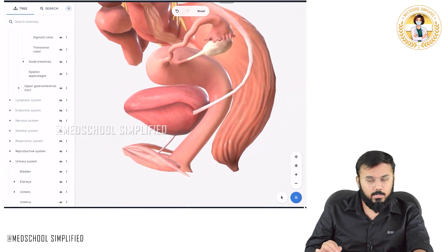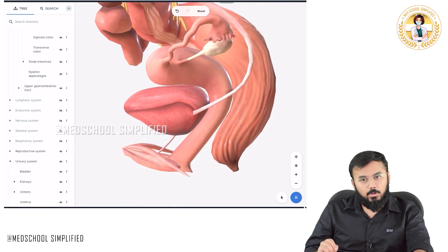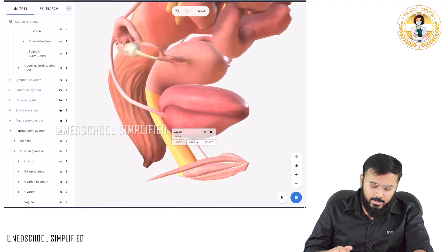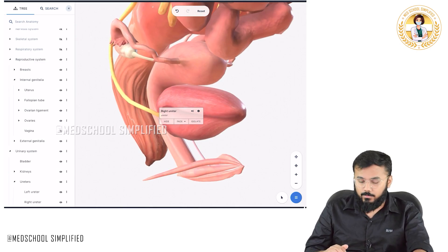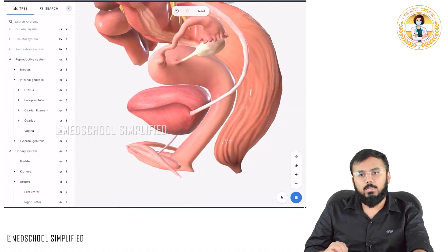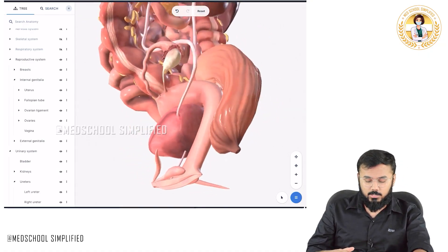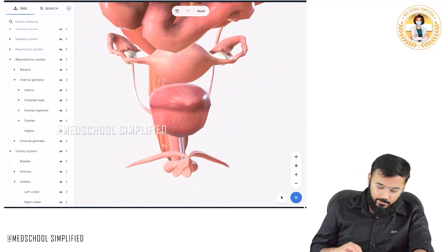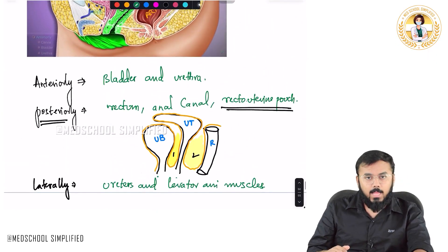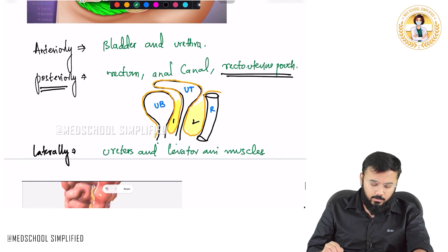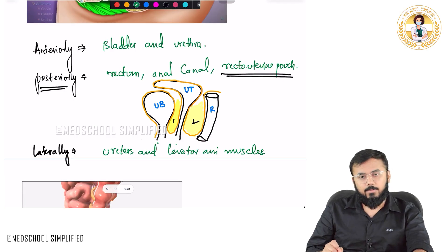Laterally, this is the vagina — laterally what do you have? You have got the ureter, and not only that, you also have another muscle called the levator ani muscle. So to recap: anteriorly you have the bladder and urethra; posteriorly you have the rectum, anal canal, and the recto-uterine pouch; and laterally you have the ureters as well as the levator ani muscles.